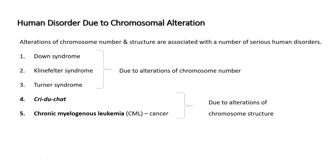Alterations of chromosome number and structure are associated with serious human disorders. Down syndrome, Klinefelter syndrome, and Turner syndrome are due to alterations in chromosome number. Cri-du-chat and chronic myelogenous leukemia, a type of cancer, are due to alterations of chromosome structure.